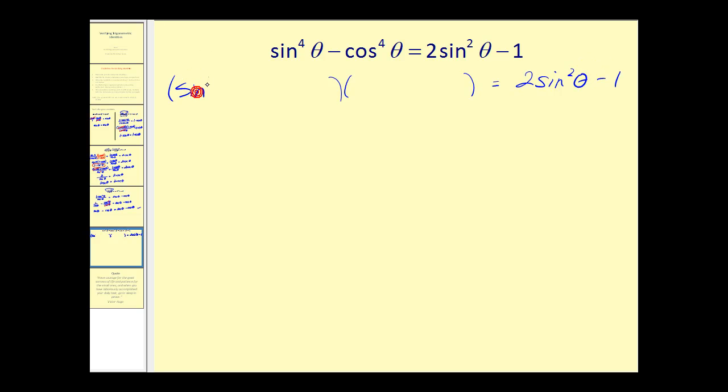Remember when we have a difference of squares, one's plus and one's minus. Next, sine squared theta plus cosine squared theta is equal to one. So on the left side, we now have just sine squared theta minus cosine squared theta.